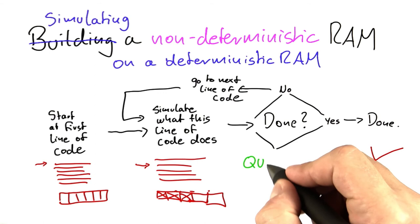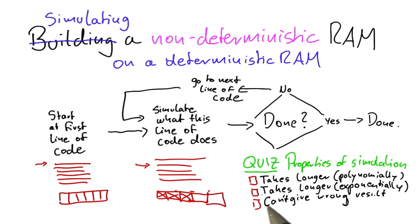Now for our next quiz, I would like you to think a little bit about the cost of this simulation, or the properties of this simulation. So I would like you to tell me, if instead of executing a program directly, or running it directly on a machine, we do a simulation of that code, what are the properties of that simulation?